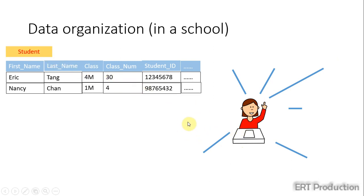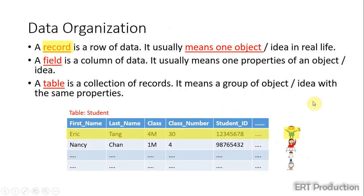Here is the general rules and summary of data organization. A record is a row of data. It usually means an object or idea in real life.